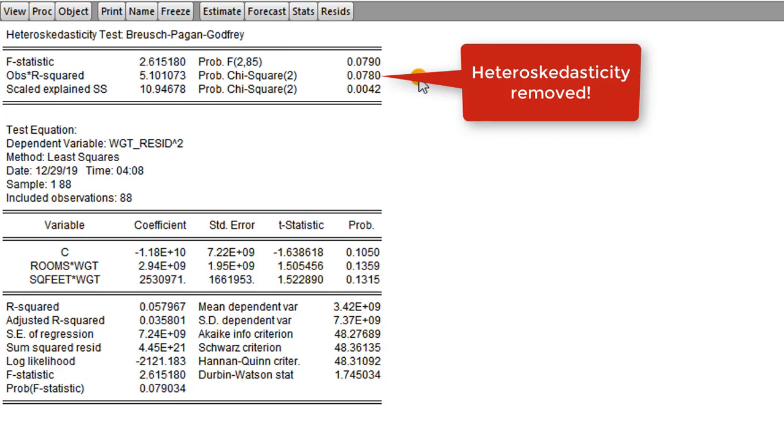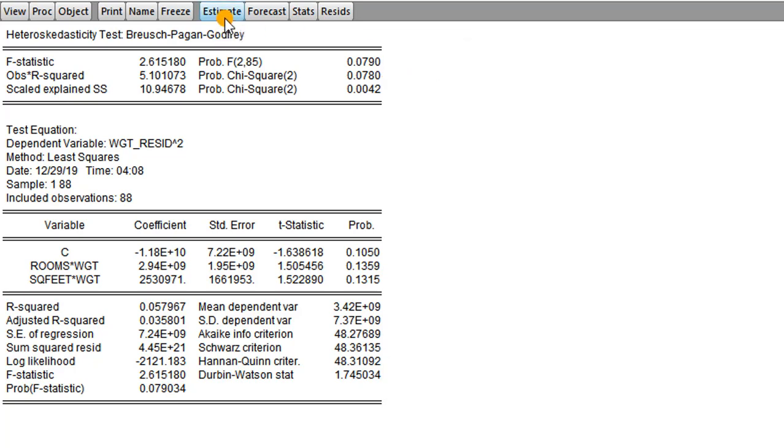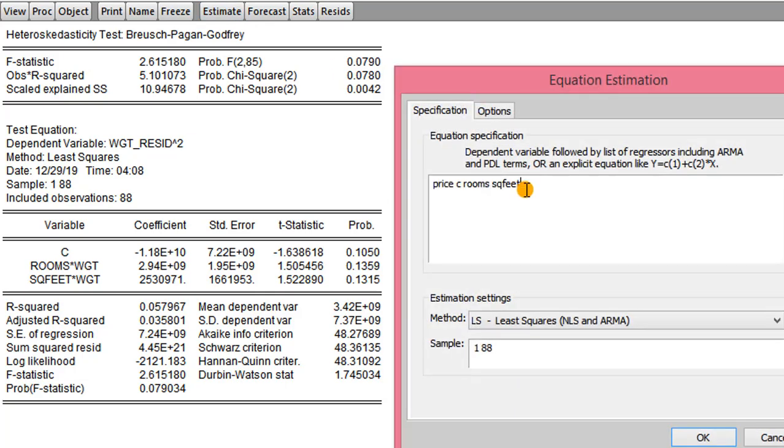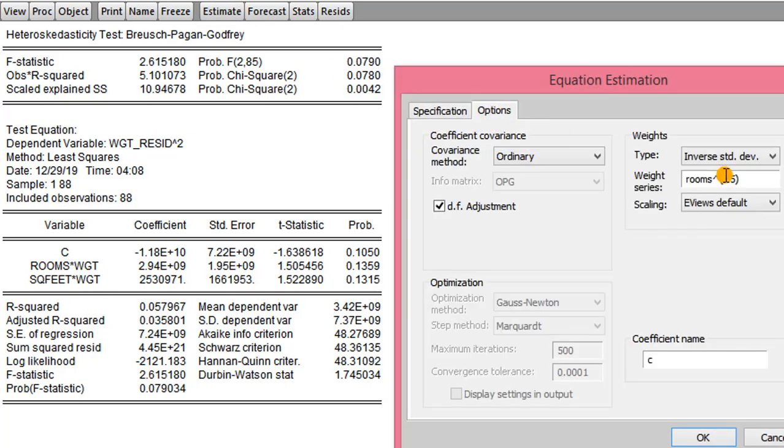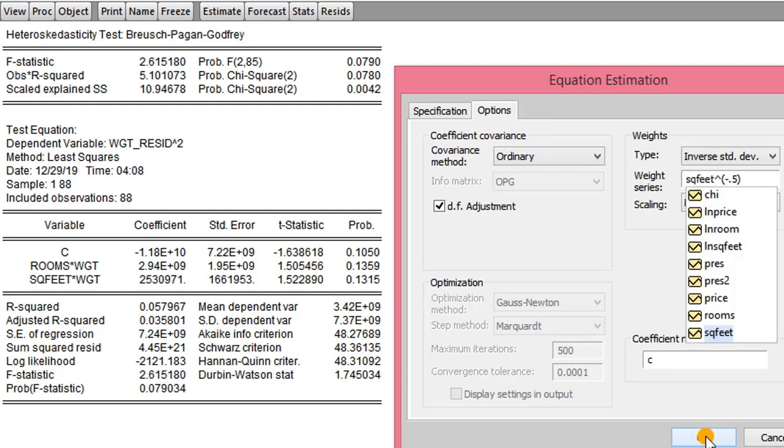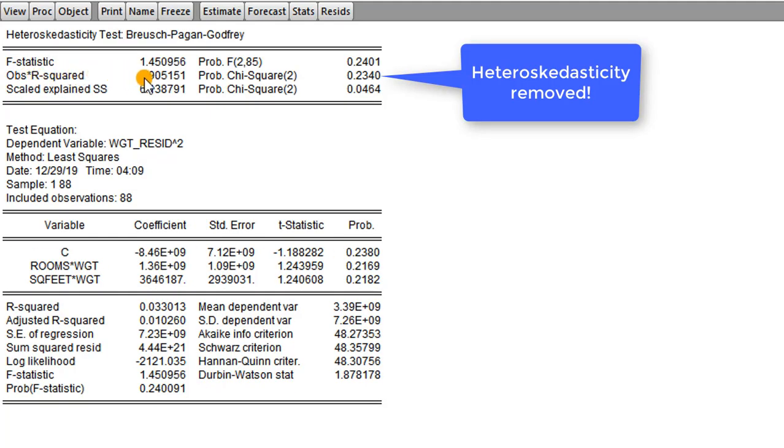So using the GLS or the WLS approach has corrected for heteroskedasticity. Let's do the second one by using square feet as the weights. So we go back to Estimate. Equations here remain the same. We go to Options. And here, I change rooms to square feet. Click OK. So here we can see the result for the heteroskedasticity test. The LM statistic is 2.905 and the p-value for the chi-square is 0.234, clearly above 0.05, indicating that the model is now homoskedastic.